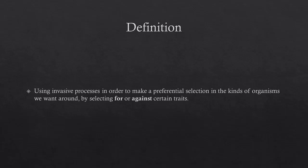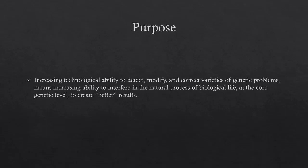What do we mean by preference in the term preferential selection? That's where the rubber meets the road. For the majority of issues, we're concerned with things like preventing genetic disease and using genetic therapy to solve problems. But the issue of eugenics immediately rears its head, so the issue can be rather thorny. With increasing technological ability to detect, modify, and correct varieties of genetic problems, we are increasingly able to interfere in the natural process of biological life at the core genetic level and create better results.